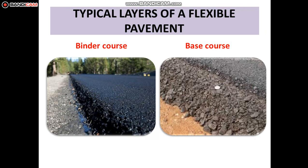Coming to the typical layers of flexible pavement — first, the binder course. This layer provides bulk to the asphalt concrete structure. Its purpose is to distribute the loads to the base course. The binder course generally consists of aggregates having less asphalt and does not require quality as high as the surface course. Replacing a part of the surface course with the binder course results in a more economical design.